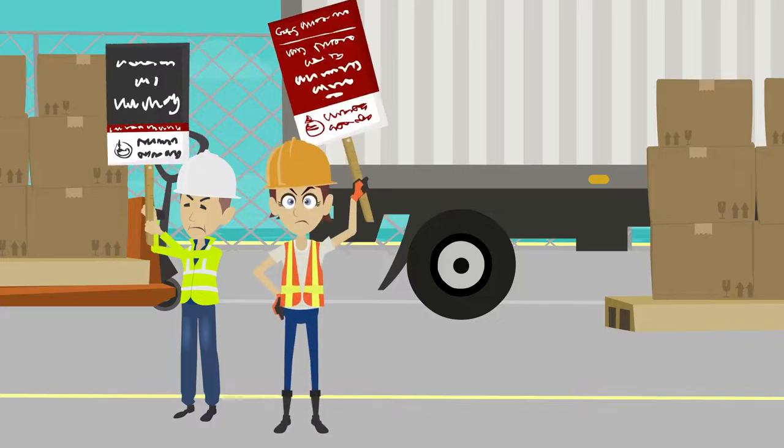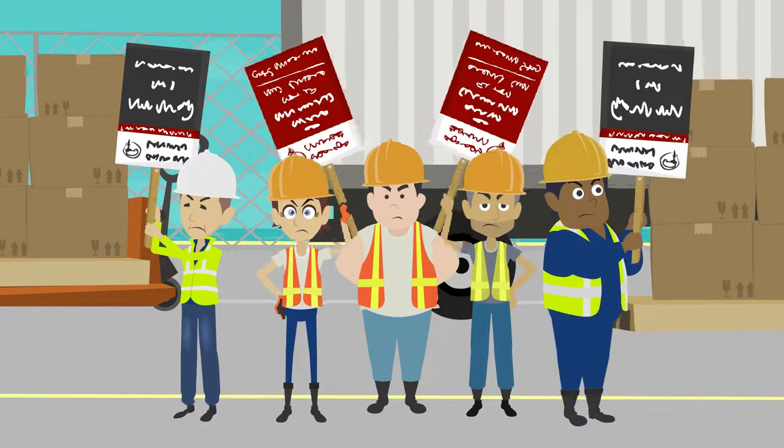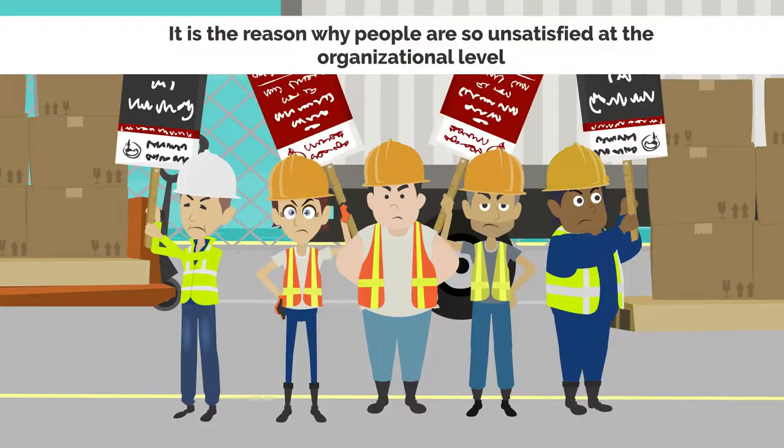It insults and alienates them, depersonalizes work, and creates low trust. It is the reason why people are so unsatisfied at the organizational level. A controlling management philosophy drives performance, communication, training, and other core systems that suppress human talent and voice.